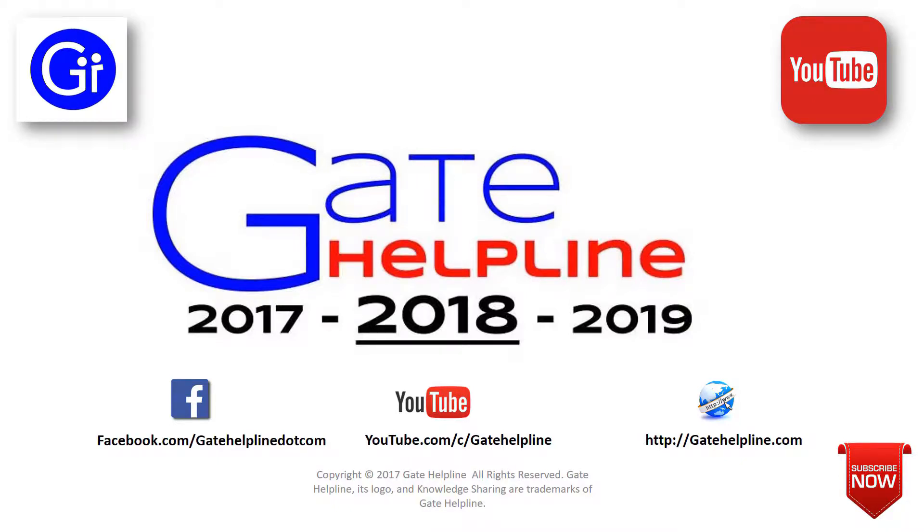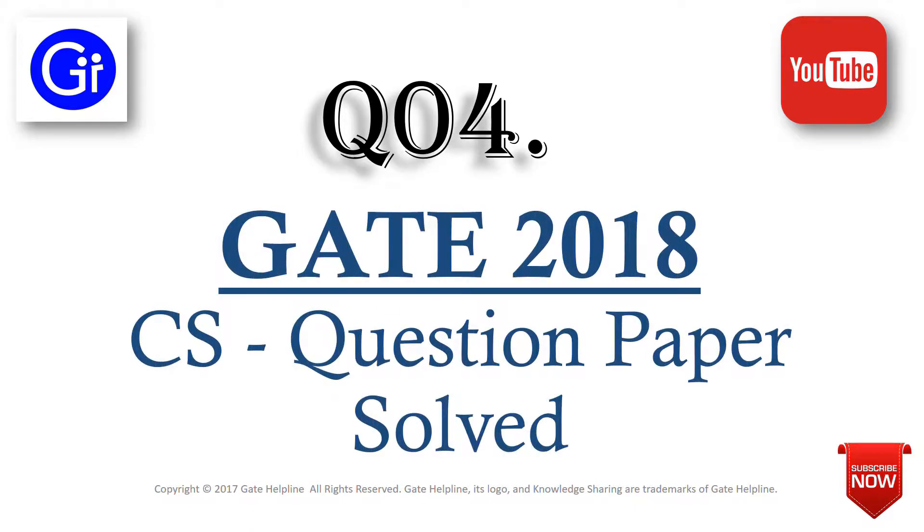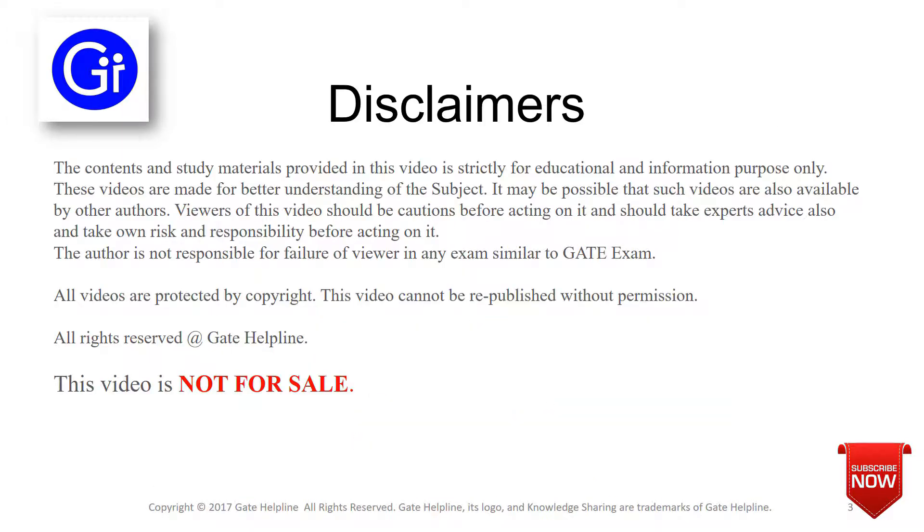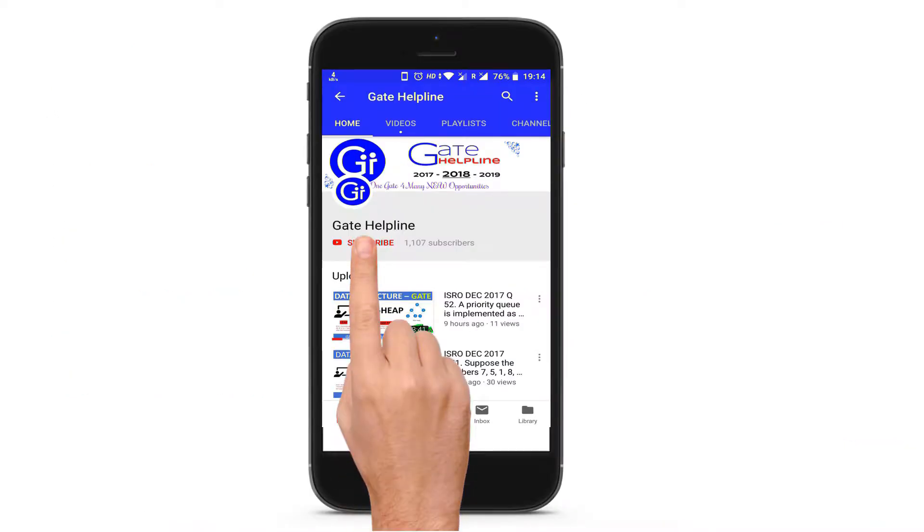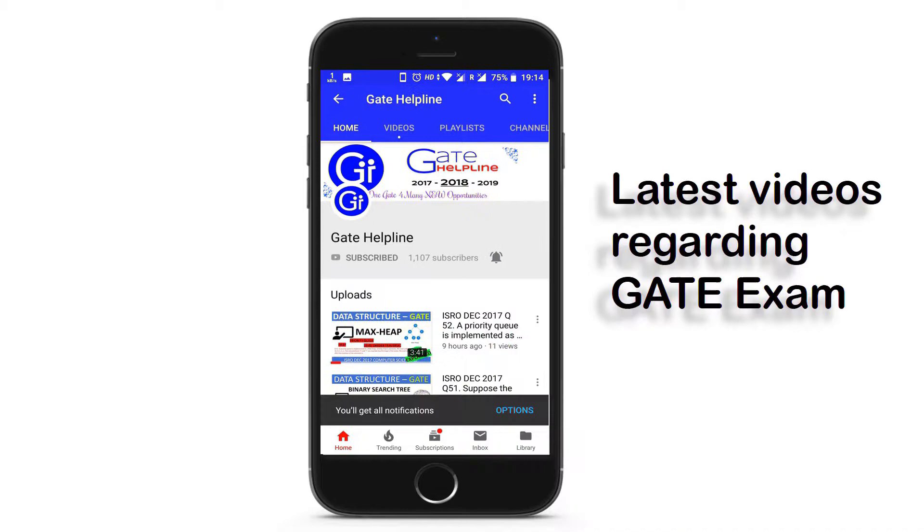Hi friends, you are watching GATE Helpline and in this video we will see question number 4 from GATE 2018 CS Question Paper, General Aptitude section. Please hit the subscribe button and click the bell icon to get all the latest updates regarding GATE exam.